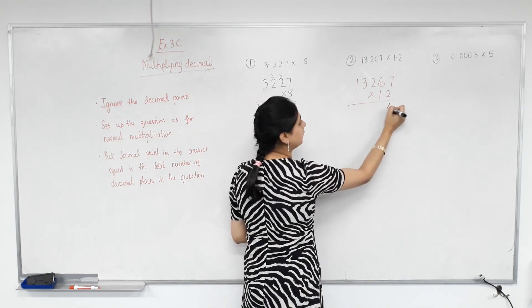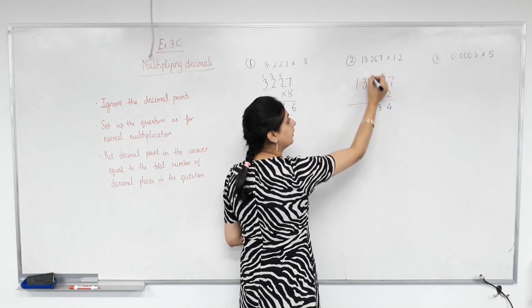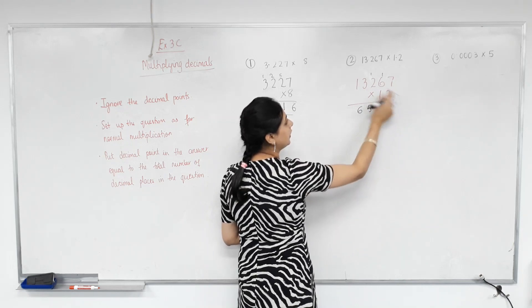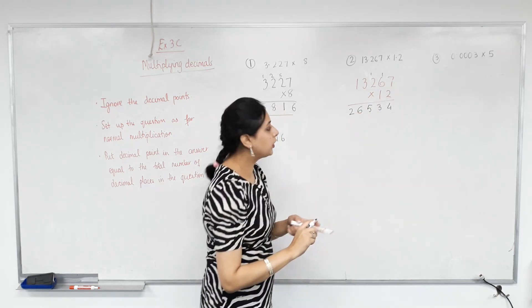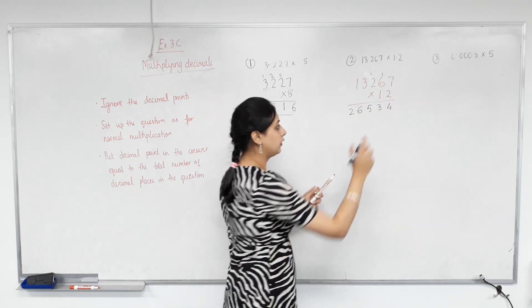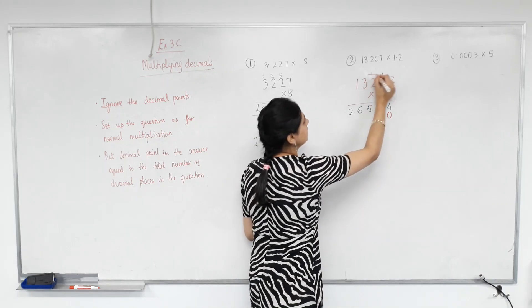2 times 7? 14. 2 times 6? 12. Plus 1? 13. 2 times 2? 4. Plus 1? 5. 2 times 3? 6. 2 times 1? 2. Now, what do we put here? Now we multiply by 10, not 1. 0. Well done. Put a 0 here. And these get crossed.